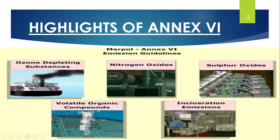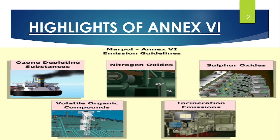Volatile Organic Compounds are emitted into the atmosphere during loading and discharging operations, and these also need to be regulated under Annex 6. On ships, we burn oily rags and sludge, which also emit certain gases. In order to regulate these emissions, incinerator regulations are brought into the picture. That is why all these things are included in Annex 6.